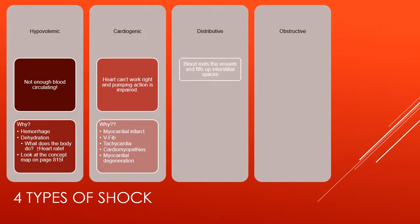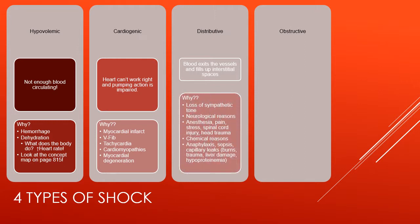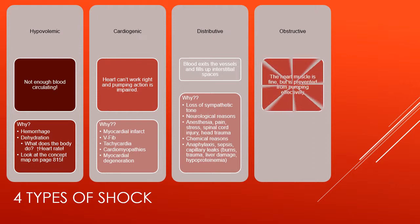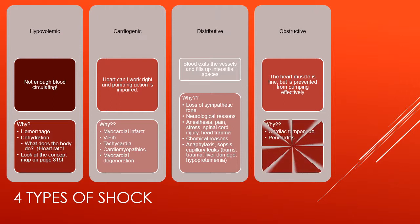In distributive shock, blood exits the vessels and fills up interstitial spaces. Why is it due to loss of sympathetic tone such as neurological reasons, anesthesia, pain, stress, spinal cord injury, head trauma, or chemical reasons such as anaphylaxis, sepsis, or capillary leaks? In obstructive shock, the heart muscle is fine, but it is prevented from pumping effectively — for example, due to cardiac tamponade or pericarditis.